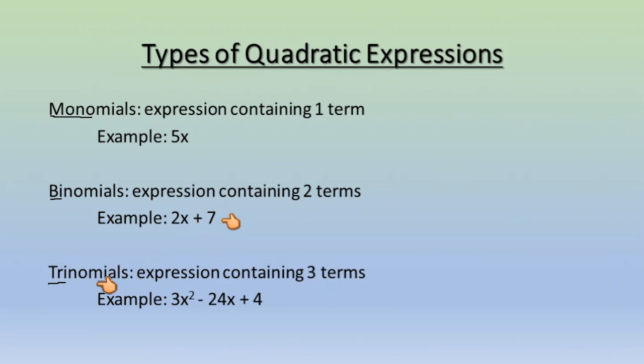A trinomial is going to be an expression that contains three terms. So I put an example here, something like 3x² minus 24x plus 4, containing three separate terms. You have your 3x², your minus 24x, and your plus 4. So when you're looking, you can determine how many terms there are and see which type of expression you're working with on that problem.